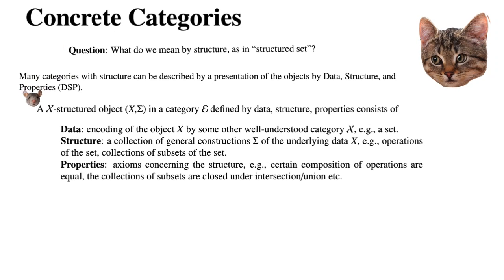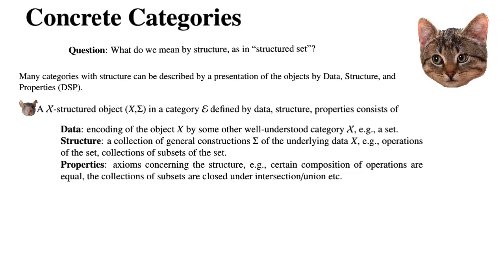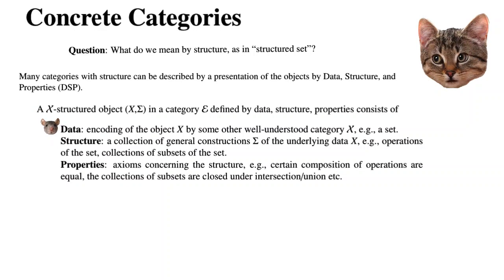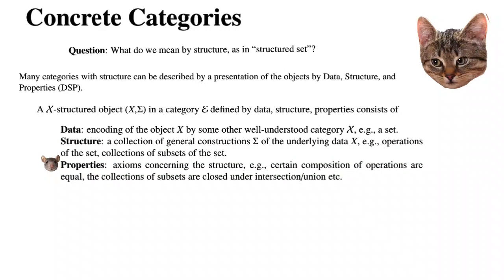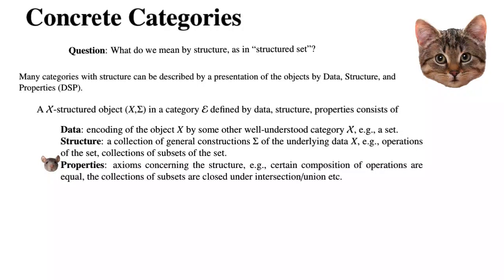What we mean by this is that an x-structured object, x-sigma, in a category E defined by data-structure-properties consists of data — which is an encoding of the object by some other well-understood category x, usually a set — and structure, which is a collection of general constructions sigma of the underlying data x, for example operations on the set or collections of subsets. By properties, we mean axioms concerning the structure, for example that certain compositions of structures are going to be equal.